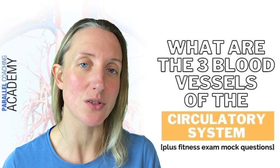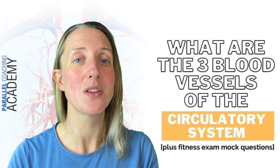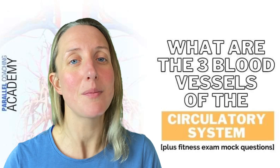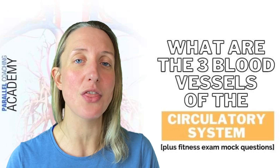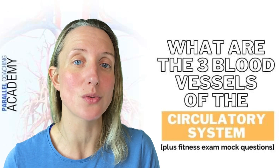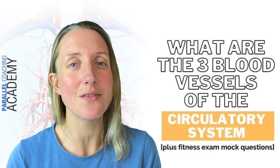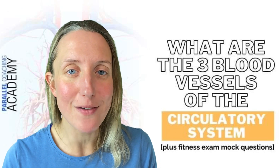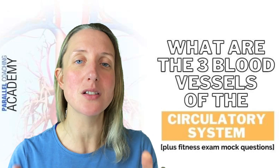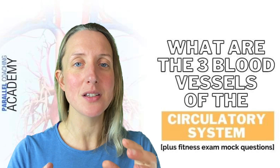We're looking at the blood vessels today, and there are three types: arteries, veins, and capillaries. Let's start with arteries — these are the thickest of all of them, they have the widest diameter of all blood vessels, and the reason for this is because they are always leaving, always on their way away from the heart.